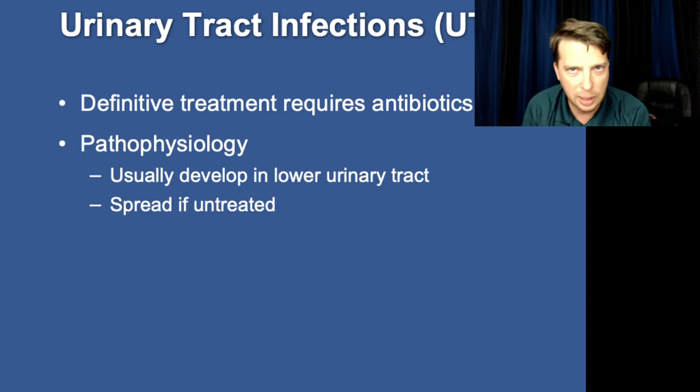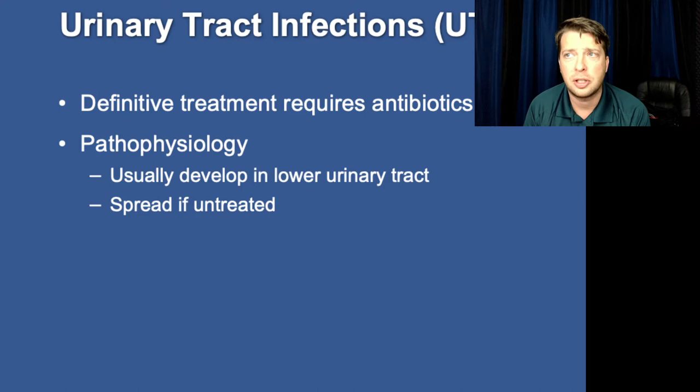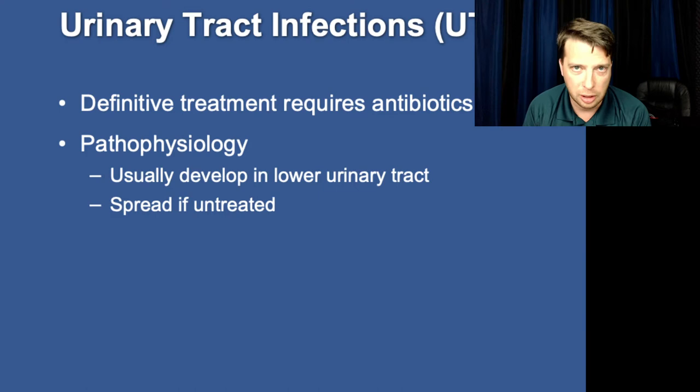We're going to talk about in chapter 22 pelvic inflammatory disease, which is essentially an infection that used to be called honeymooner's syndrome — it's an infection of both the UTI and the vaginal and uterine tract, and it's the result of frequent intercourse and not cleaning properly or not protecting yourself properly.